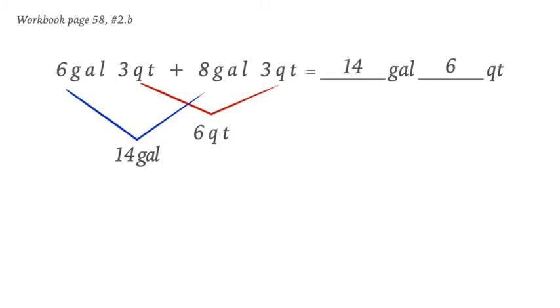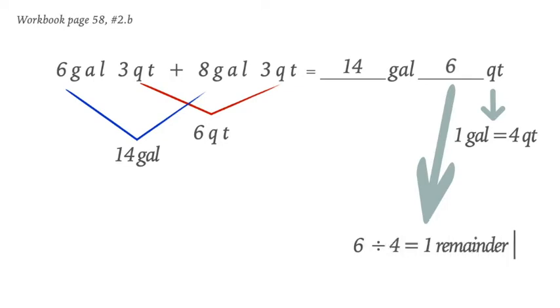So do you think this is our final answer? The answer is no, because as we already know, one gallon is bigger than a quart. And how many quarts are there in one gallon? Yes, we have four quarts in one gallon. But our answer is six quarts, which means we can make this even smaller and more accurate. We can solve this by dividing six into four, and then we will get one remainder two.